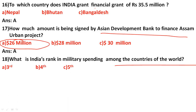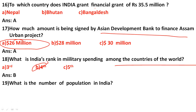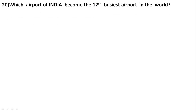India's rank in military spending among the countries of the world — the correct answer is option B: fourth rank. Then, the population of India is approximately 1.36 billion.